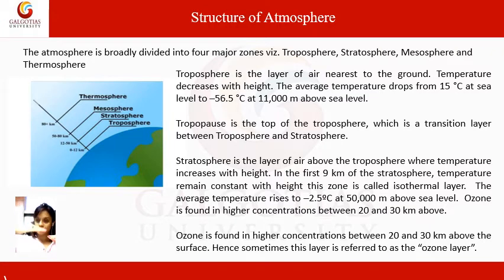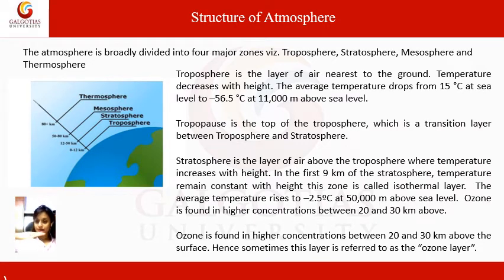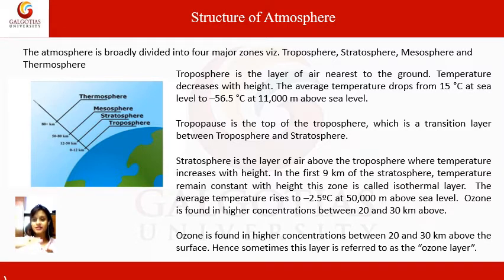The characteristic of the troposphere is that as we move up through it, the temperature decreases with height. The average temperature drops from around 15 degrees Celsius at sea level to minus 56.5 degrees Celsius at an average height of 11,000 meters above sea level.